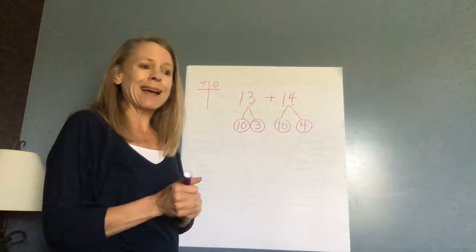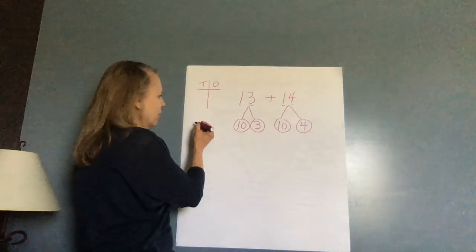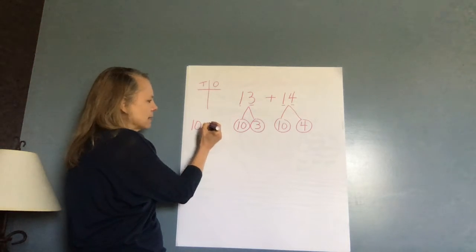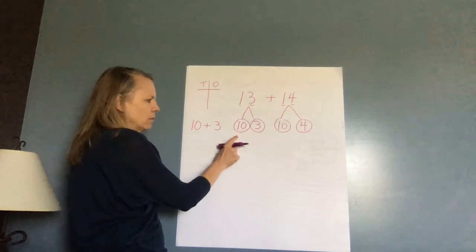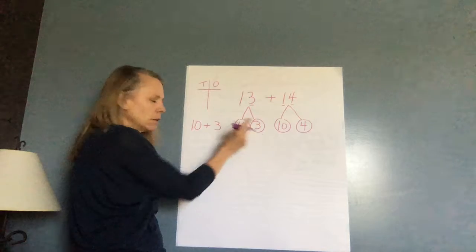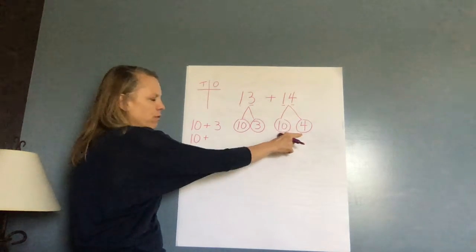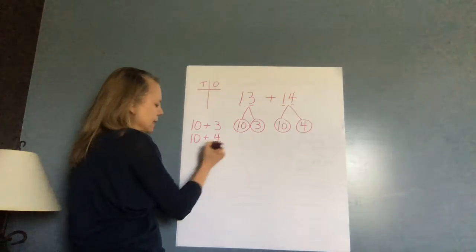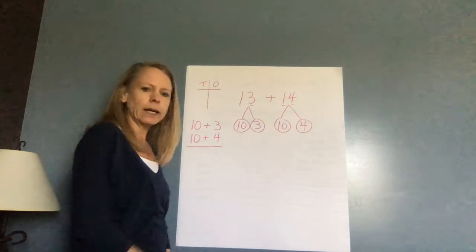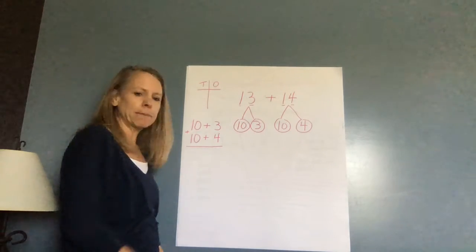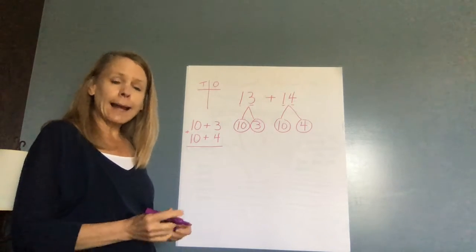So now I want to add these together. If I'm going to put them here, I'm going to say 10 plus three, because that makes 13. And 10 plus four equals 14. I'm going to draw my line underneath. And then I'm going to put a plus sign here on the side. Now when I add them, I'm going to add the tens first.